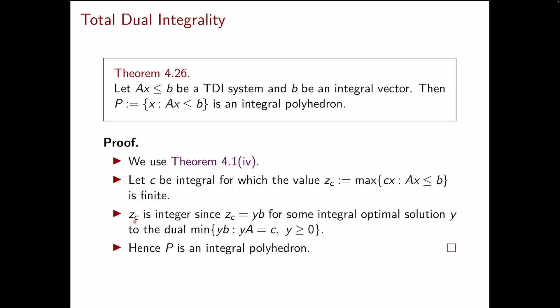Now, we can easily prove that z_c is always integer and we can do so using duality. In fact, the dual to our maximization linear programming problem is minimize yb such that yA is equal to c and y is non-negative. From our TDI assumption, we know that this dual problem has always an optimal solution y that is integral. So, the optimal value will be y times b, which is an integer number because y is integral and b is integral by assumption.